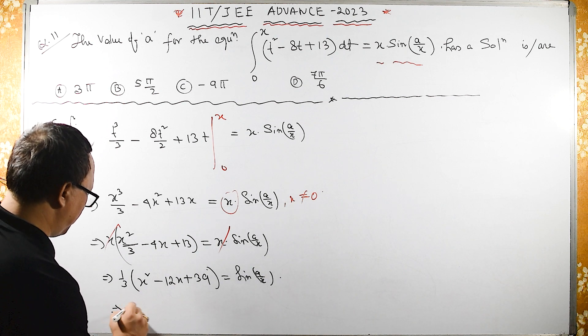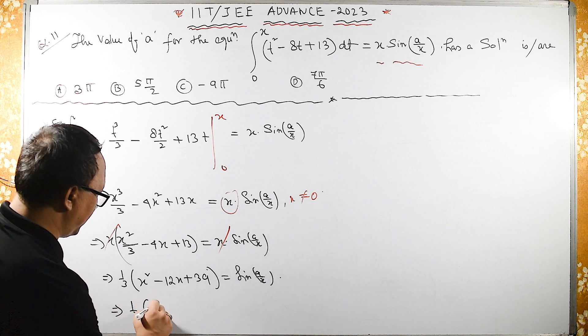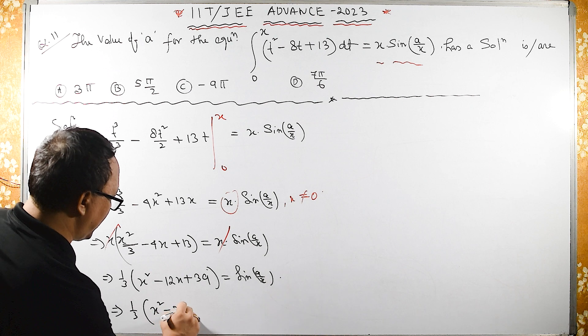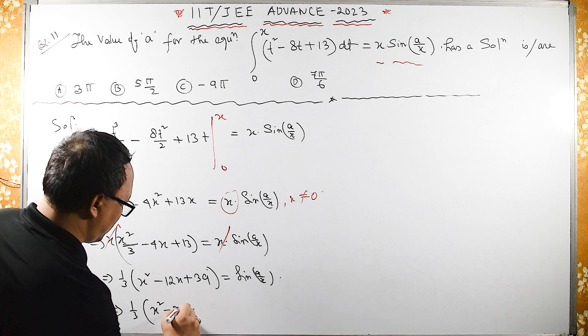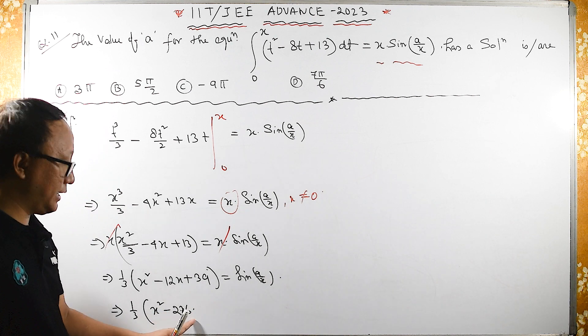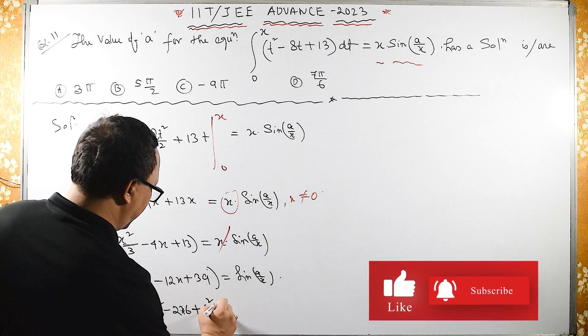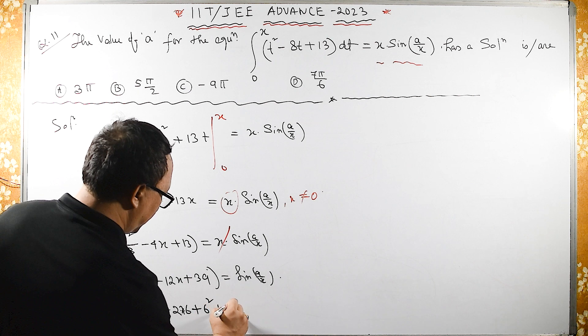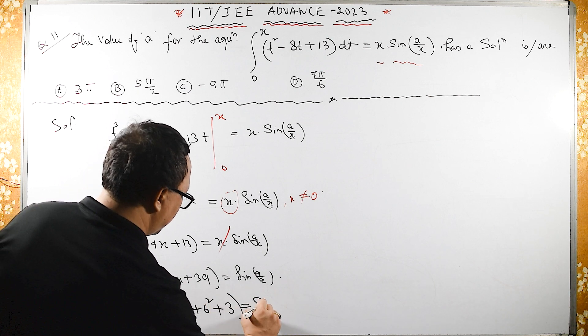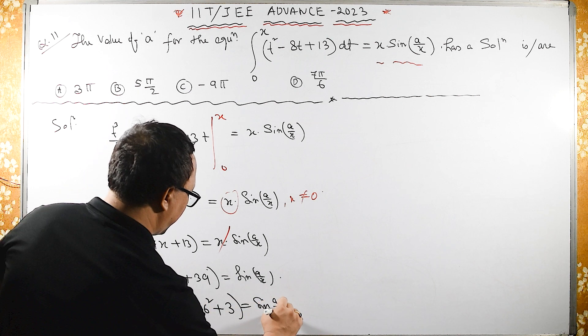This implies 1/3, let us make perfect square here: X² - 2·X·6, here X·6 is 12. Plus 6² is 36, plus 3 is 39, equals sin(A/X).